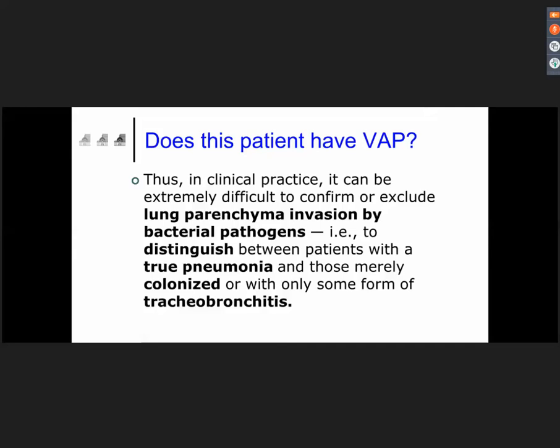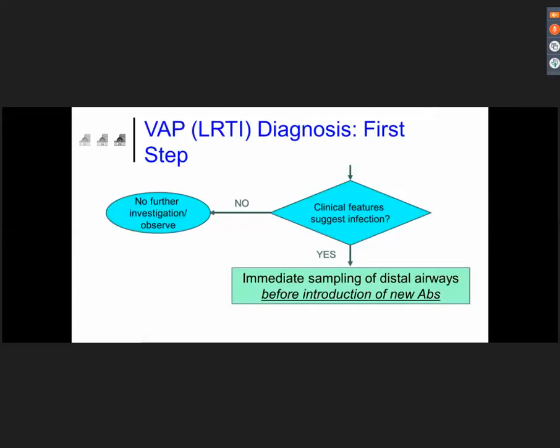Because using only those very simple criteria, in many cases it will be extremely difficult to confirm or exclude the invasion of the lung parenchyma by a bacterial pathogen — which is to say, to distinguish between a patient with true pneumonia and a patient merely colonized, or with only some form of tracheobronchitis. I will come back to this issue in a moment.